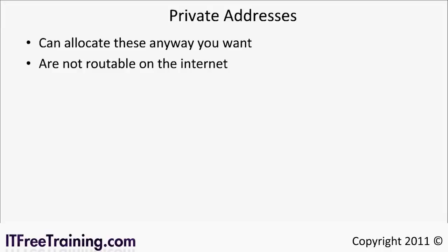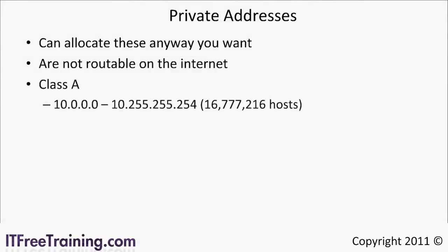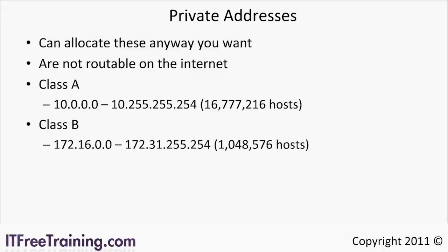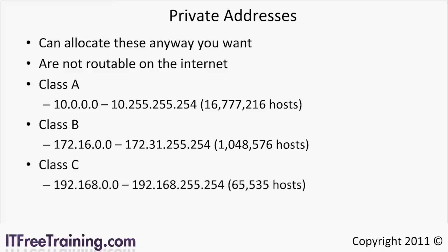There are three groups of private addresses. The first is class A, which goes from 10.0.0.0 to 10.255.255.254. The next is class B, from 172.16.0.0 to 172.31.255.254. And lastly class C, 192.168.0.0 to 192.168.255.254. You are free to use all these addresses any way that you want and route them in your organization any way that you want, just remember that they are not routable on the internet.